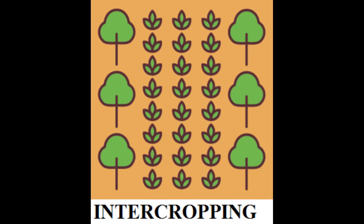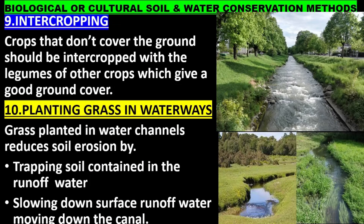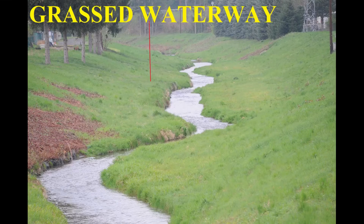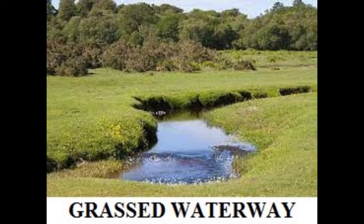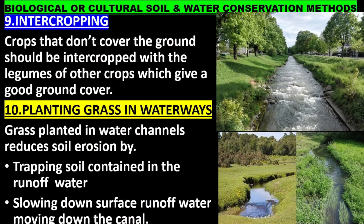Intercropping: crops that don't cover the ground should be intercropped with legumes or other crops that give good ground cover. Planting grass in waterways: grass planted in water channels reduces soil erosion by trapping soil contained in the runoff water and slowing down surface runoff water moving down the canal.